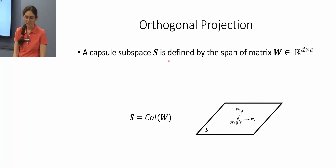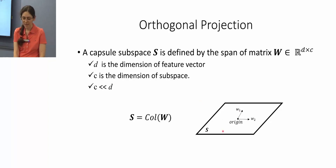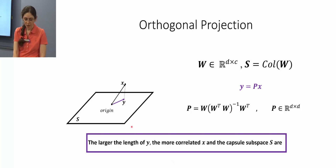Assume we have a capsule subspace S defined by the span of matrix W, which has d rows — where d is the dimension of the input feature vector — and c columns, which is the dimension of the subspace. Usually c is much smaller than d. Here we show a subspace S with basis W1 and W2 in R3 space. The orthogonal projection has a closed-form solution: we find the projected vector y using the projection matrix P. The larger the length of projected vector y, the more correlated the input feature vector x and capsule subspace S are.